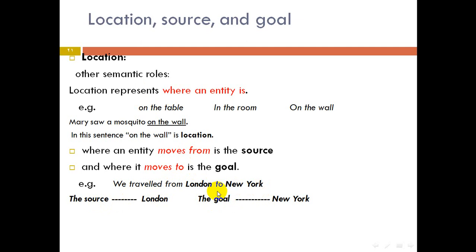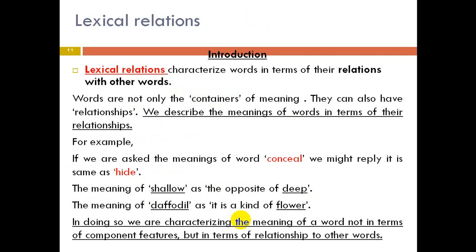So far we have talked about almost seven or eight semantic roles. Let's move on to lexical relations.